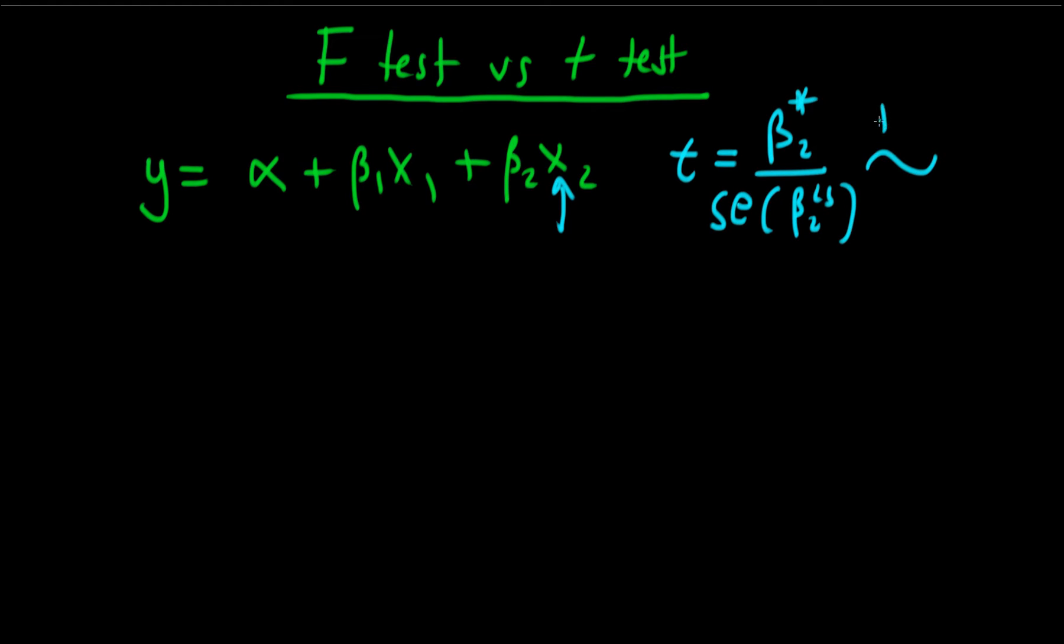Under the null hypothesis, this is distributed as a T-distribution with n minus 3 degrees of freedom, because we've got three parameters: alpha, beta 1, and beta 2.